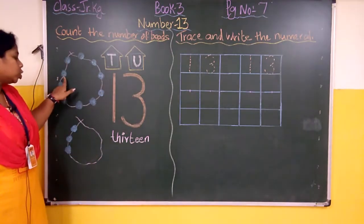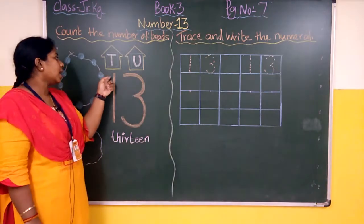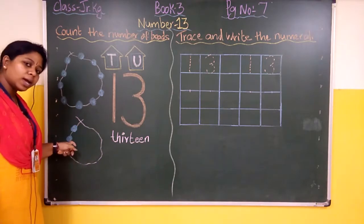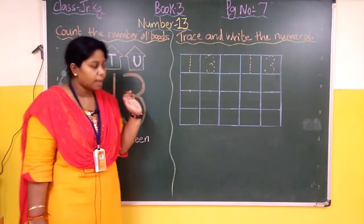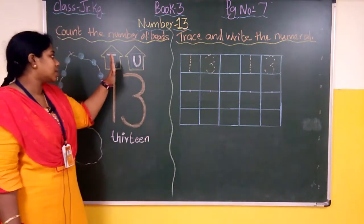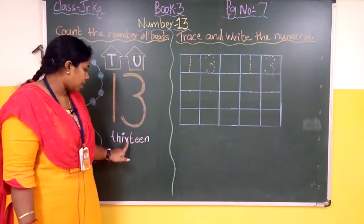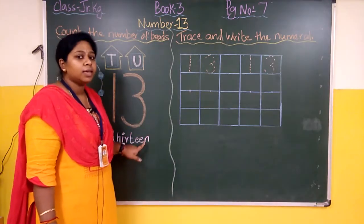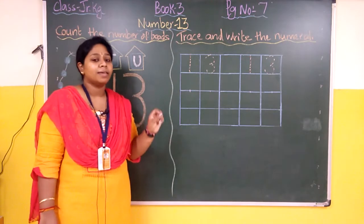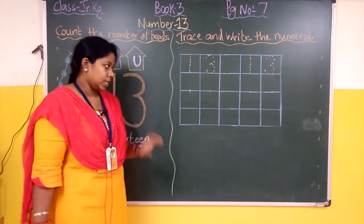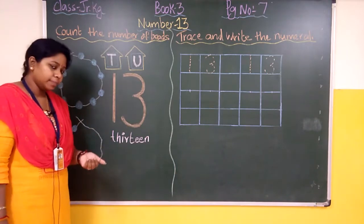Yes. 1, 2, 3, 4, 5, 6, 7, 8, 9, 10, 11, 12, 13. So there are 13 beans. 1, 3, 13. 3 comes under units, 1 comes under tens. 1, 3, 13. T, H, I, R, T, E, E, N, 13. Got it? Yes. So abhi aapko pata chal gaya how you have to count and how you have to find out how many beans. Right. Acche se karna.